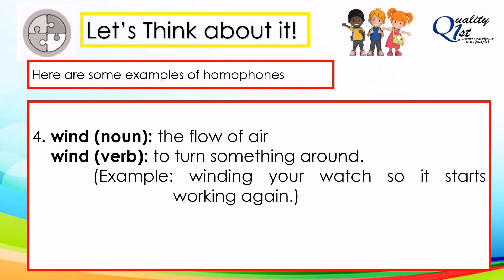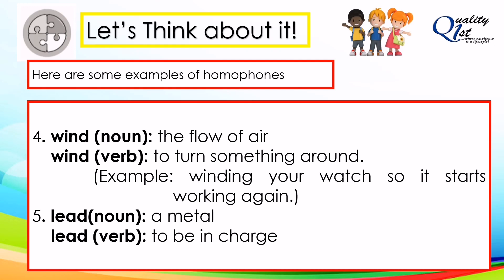Example number four is wind. Wind as a noun means the flow of air. Another one is wind as a verb, which means to turn something around — for example, winding your watch so it starts working again. And lastly, you have the word lead. Lead as a noun means a metal, and lead as a verb means to be in charge.